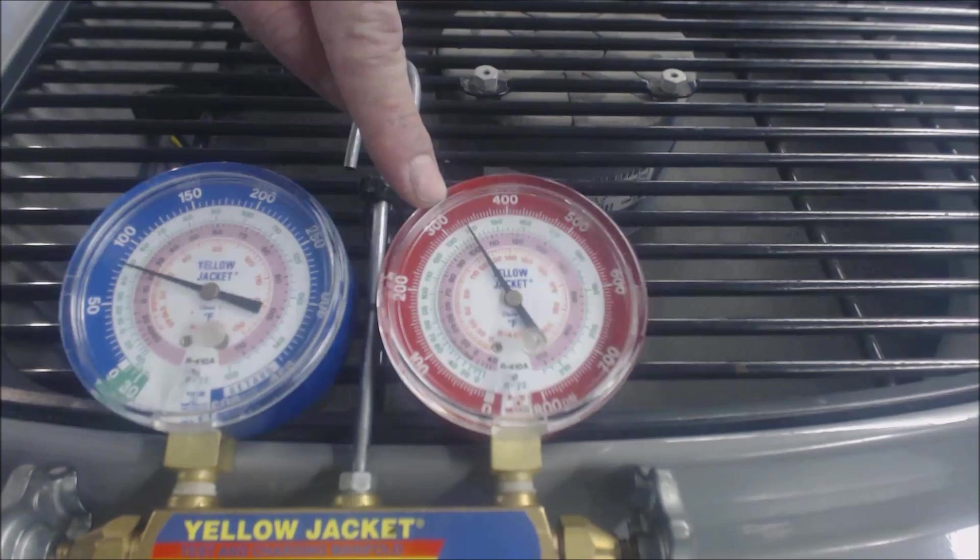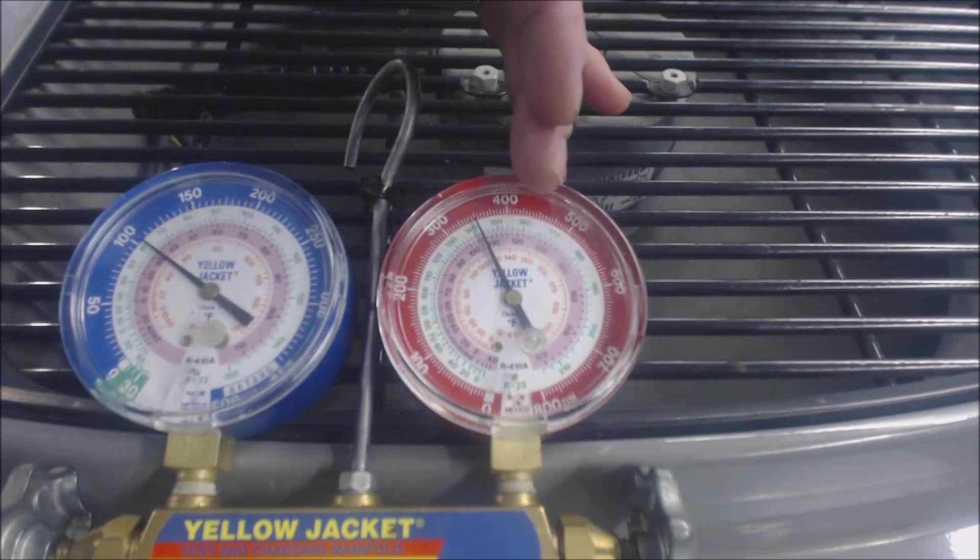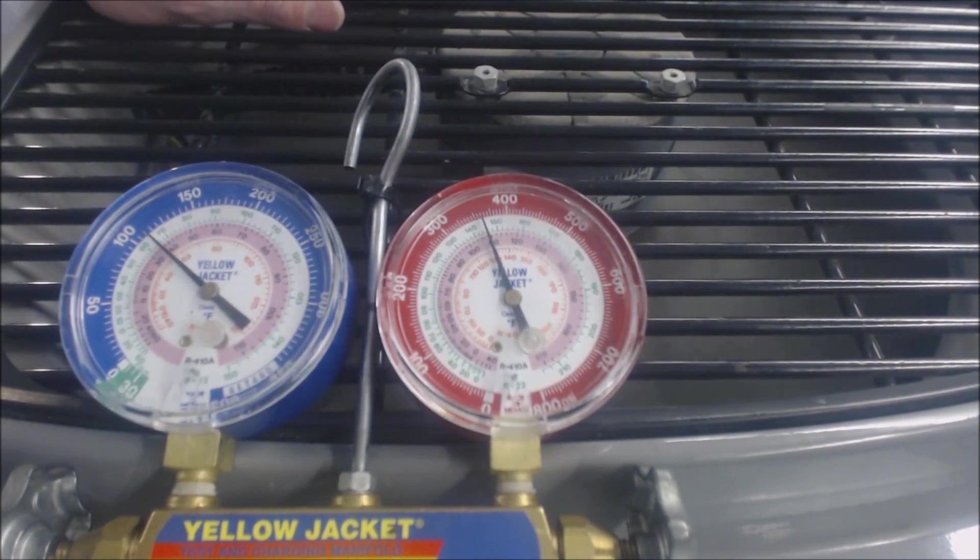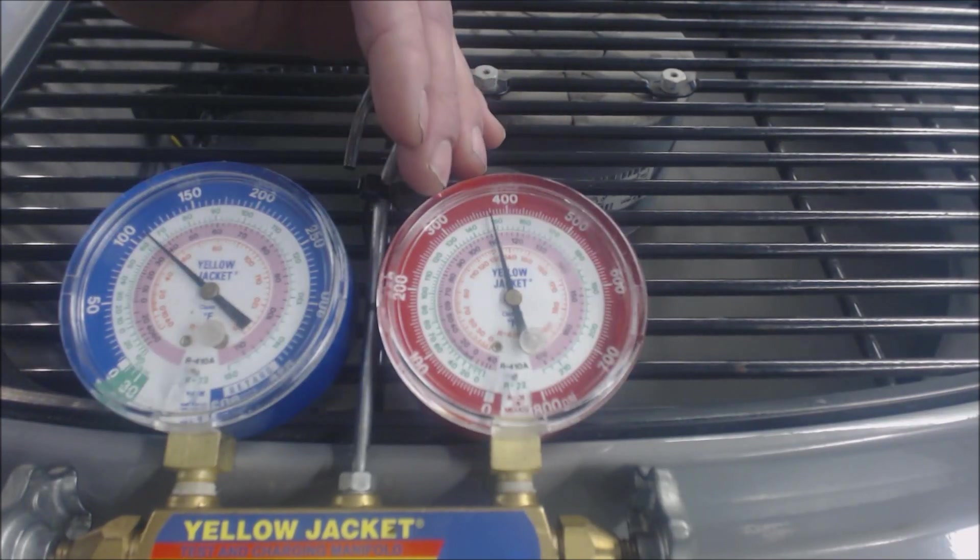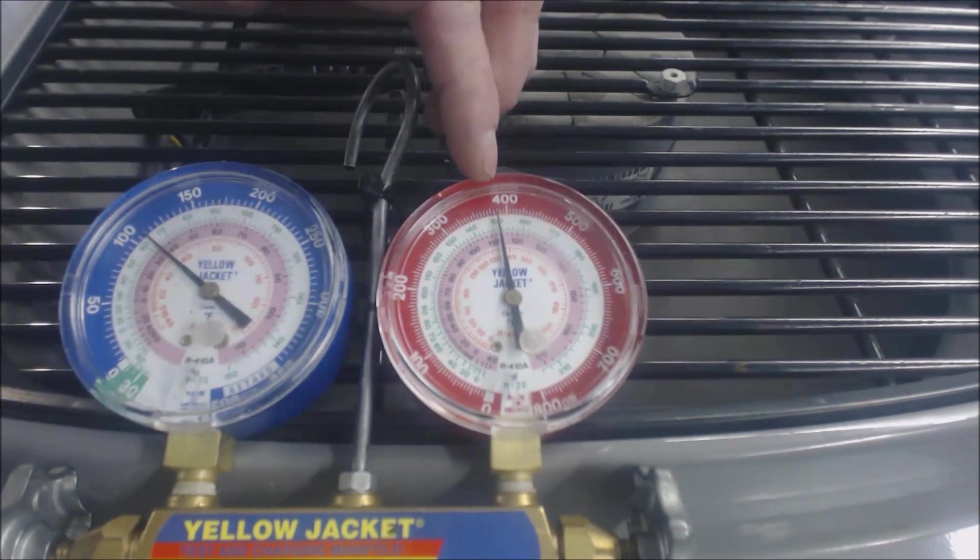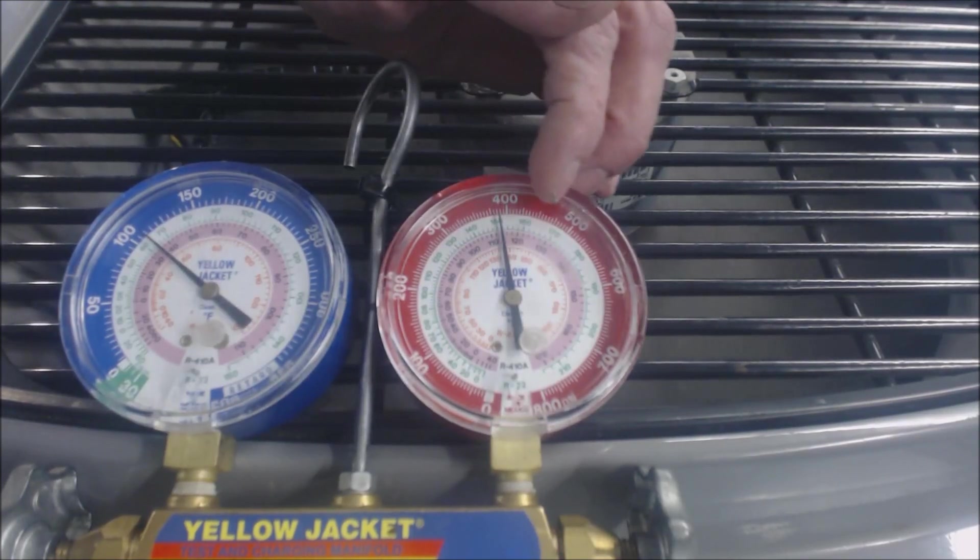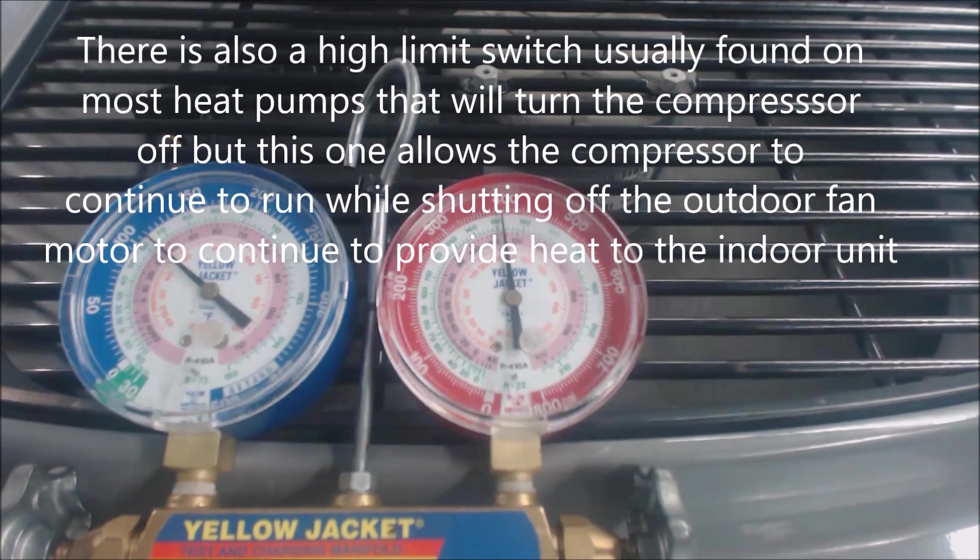So we just saw at about 325 PSIG, the outdoor fan is now allowed to turn back on again. So that pressure switch is allowing the fan to shut off at 420 and turn it back on at about 325. So that's the range that this needs to operate in as a safeguard so that the pressure does not just continue to rise until the pressure relief inside the compressor ends up popping.